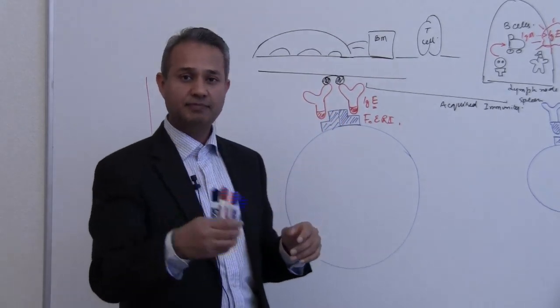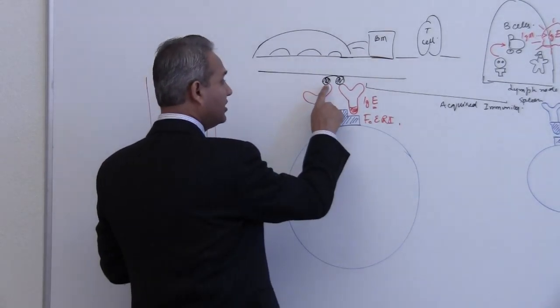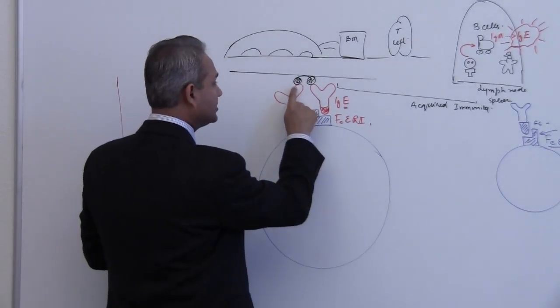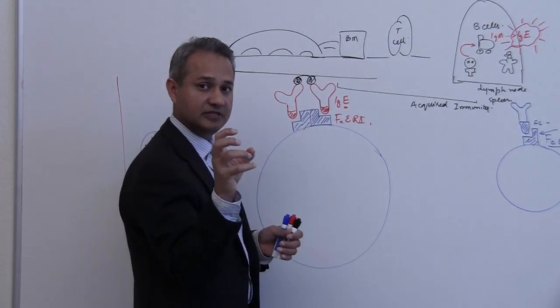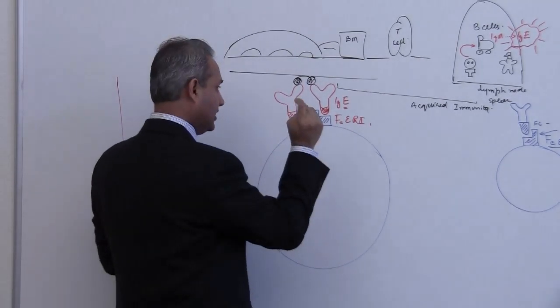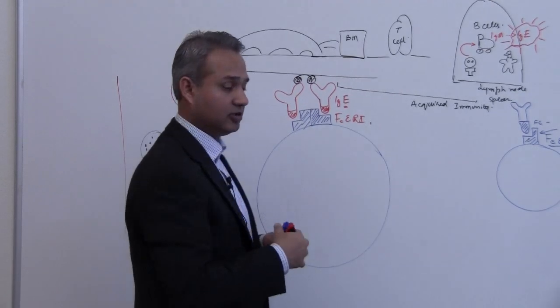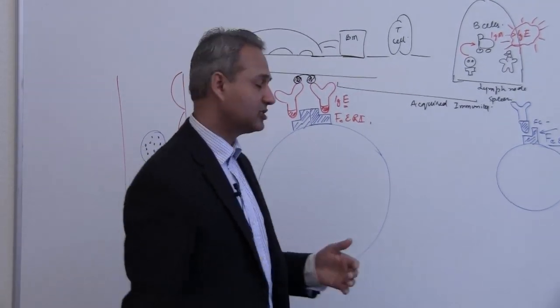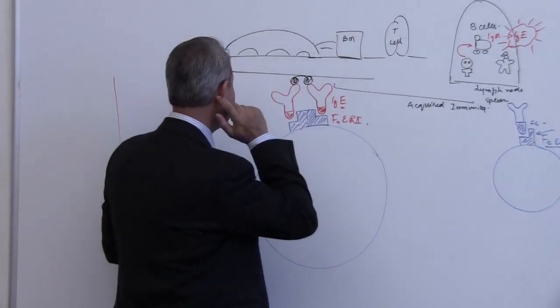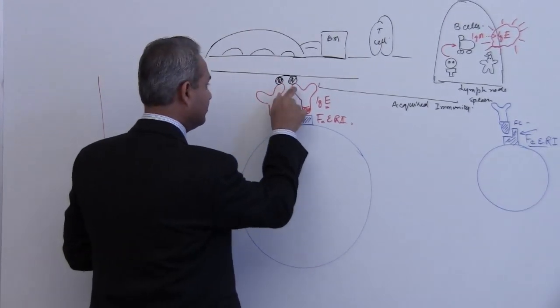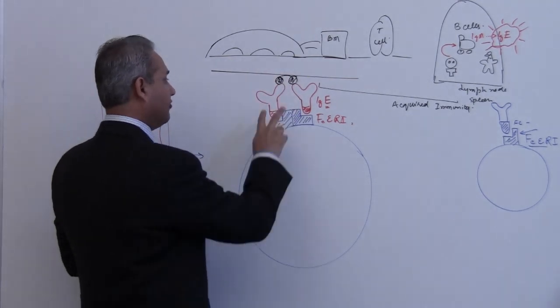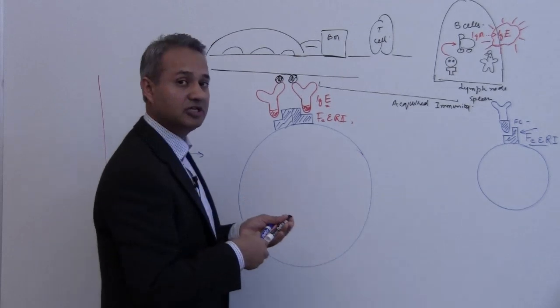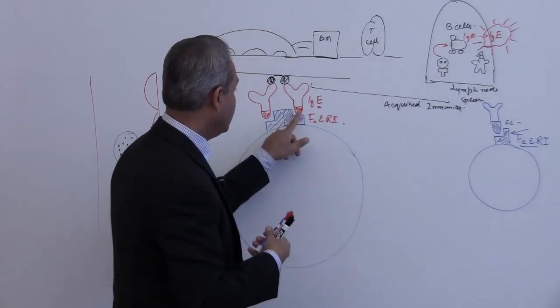When the allergen comes and attaches to the antigen binding site on the IgE immunoglobulin - and I regret we haven't talked about immunoglobulins yet, we'll cover them in our next lectures - but for now, the allergen will bind to this antigen binding site. When that allergen binds, it causes a conformational change in the Fc portion of the IgE.